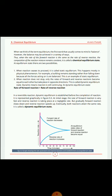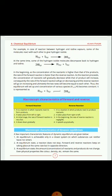This is called dynamic equilibrium. For example, in the reaction of hydrogen and iodine vapors: hydrogen and iodine combine to form hydrogen iodide, and in the reverse reaction, hydrogen iodide decomposes to produce hydrogen and iodine. In the beginning, the concentration of the reactants H₂ and I₂ is higher than the products.